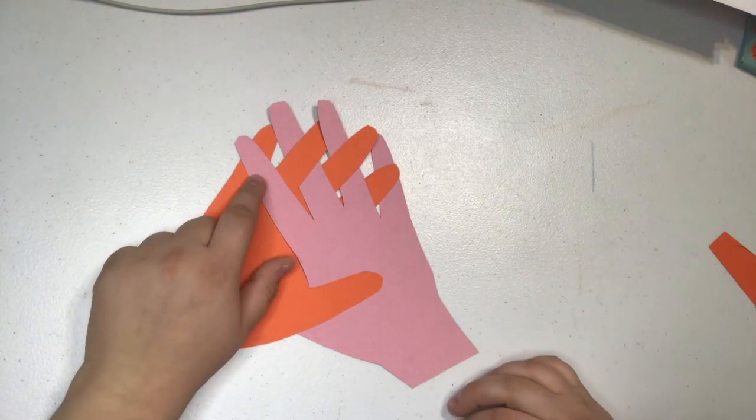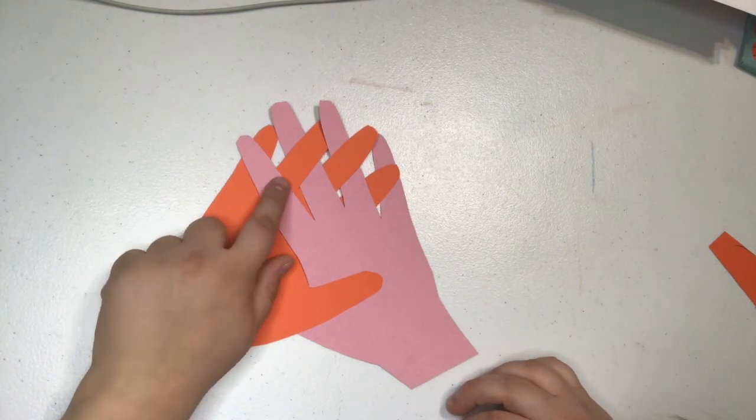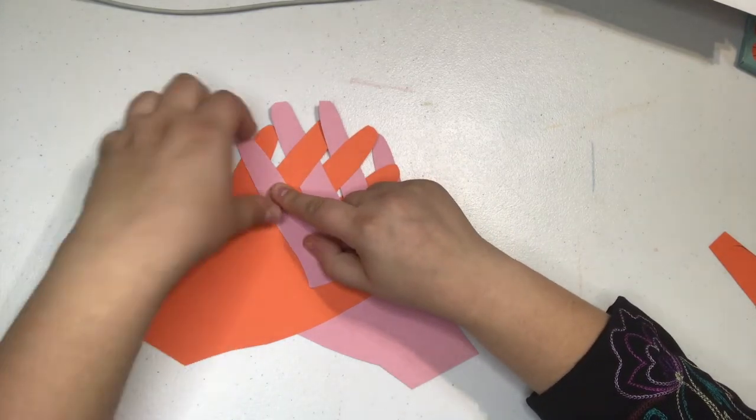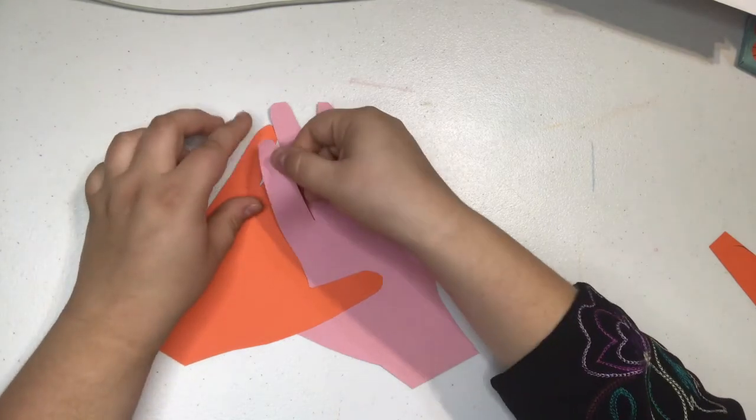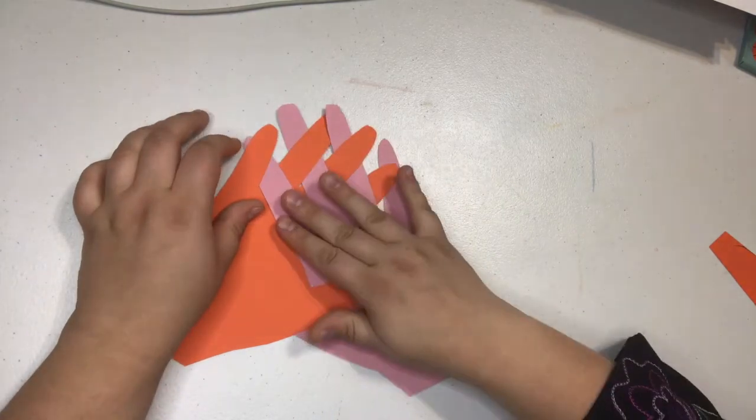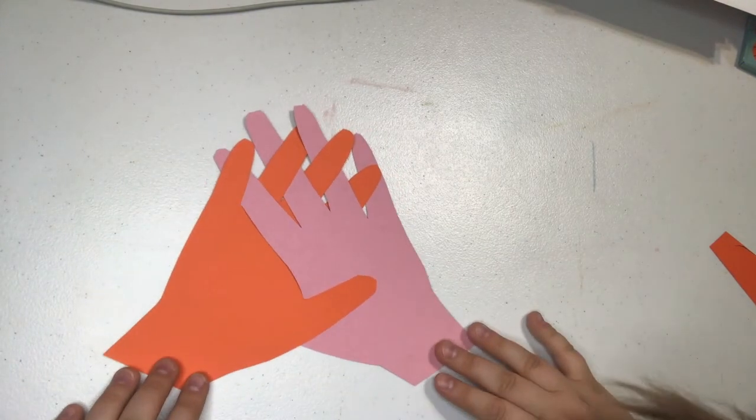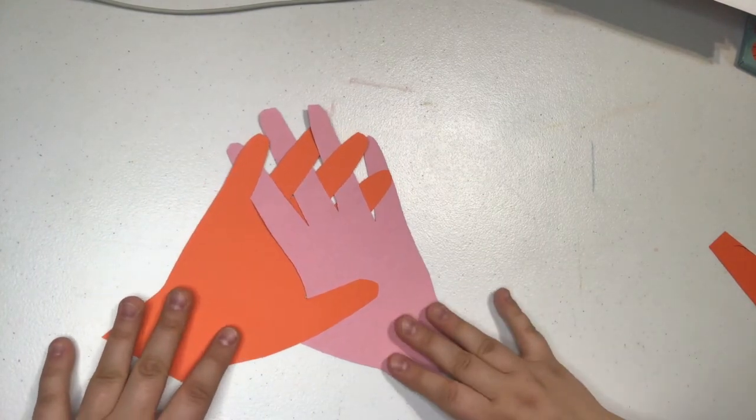Now for our last one, it's going to go over this middle one and then under the last pinky. Let's see if we can get that in there. Can you tell how it looks like the hands are woven together?